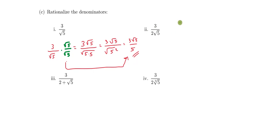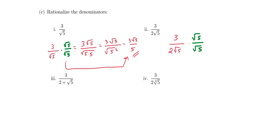Let's do Roman numeral two, which is a little more complicated. Here in the denominator we have not just a square root factor but also a factor of 2. Our goal is simply to eliminate the square root in the denominator, so we again multiply by the square root of 5 over the square root of 5. This gives us 3 square root of 5 all over 2 times the square root of 5 squared, which is 2 times 5, giving 3 square root of 5 over 10.